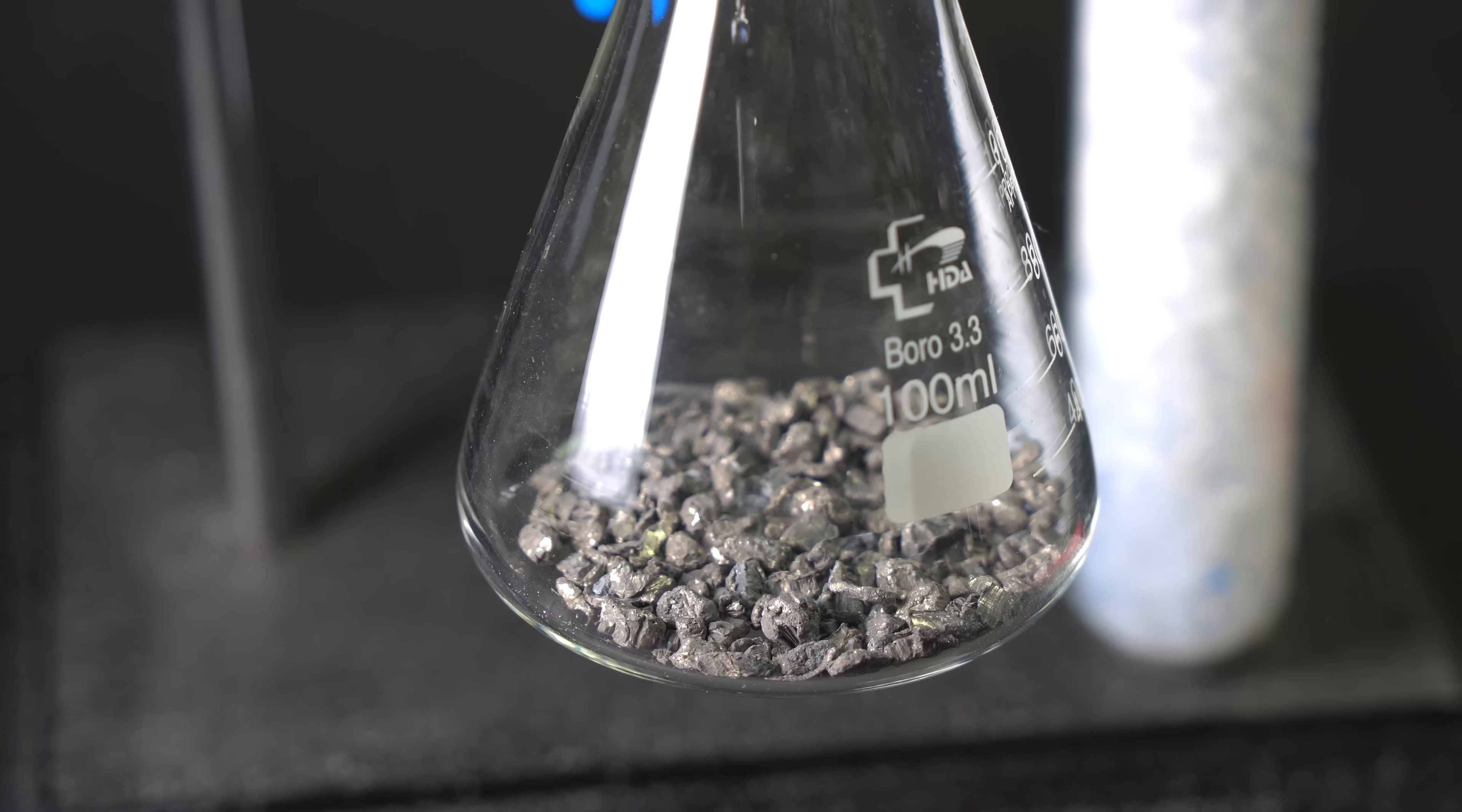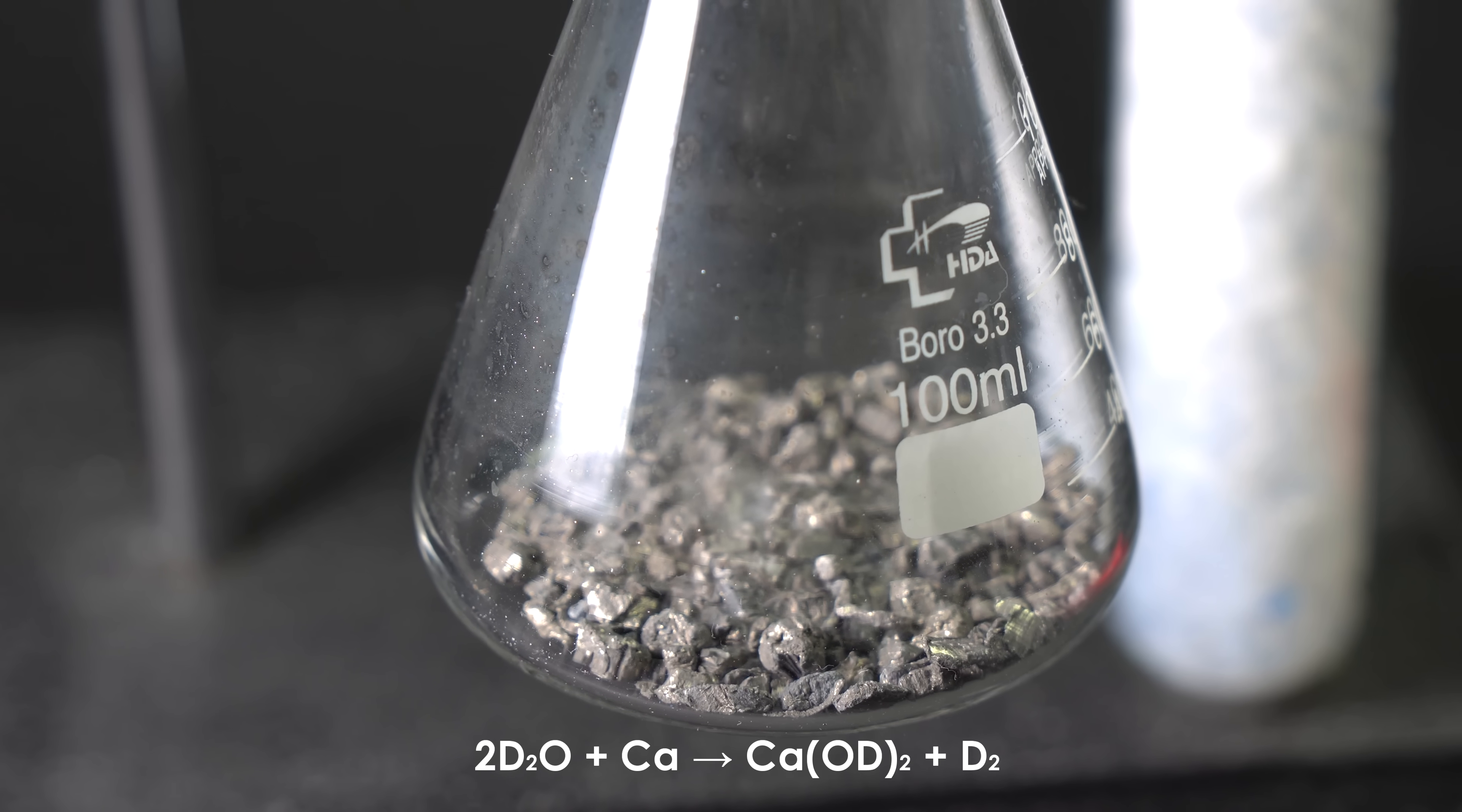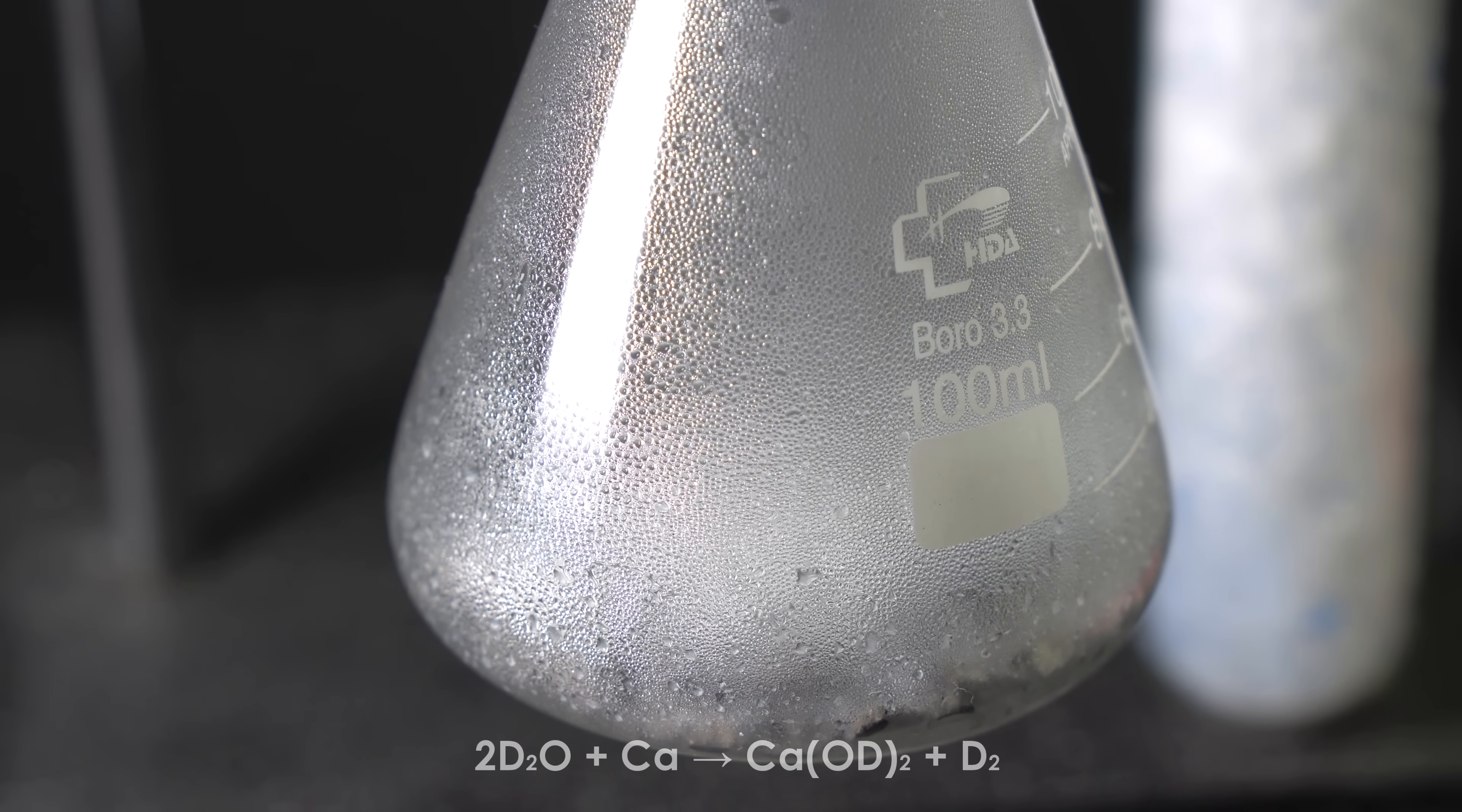I will obtain pure deuterium using a chemical reaction between heavy water and metallic calcium. The reaction between heavy water and calcium isn't that different from the same reaction with regular water. It also produces a lot of heat. The only difference is that the reaction produces deuterium and calcium deuteroxide, instead of hydrogen and calcium hydroxide.